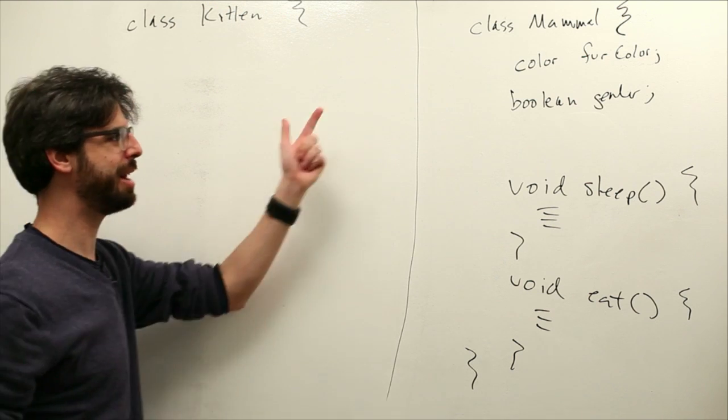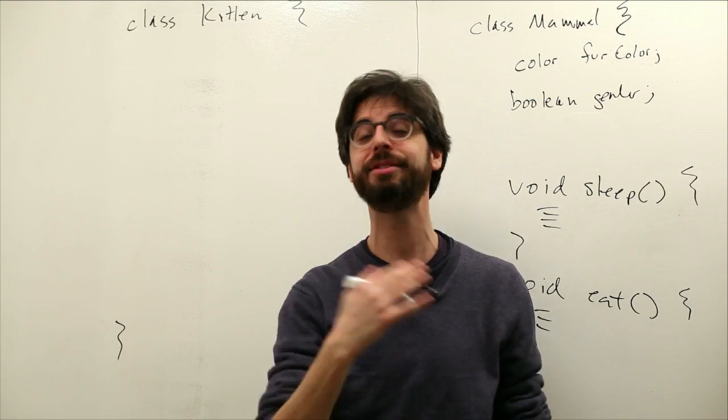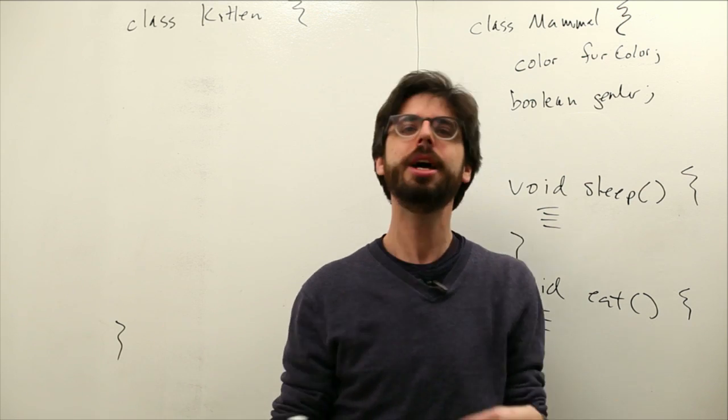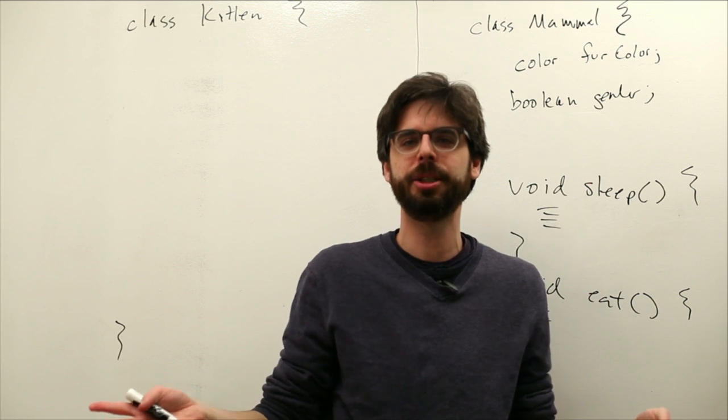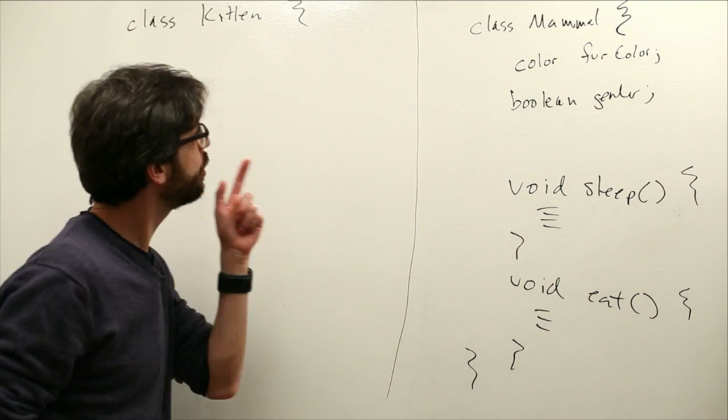And a kitten is also going to have a fur color, and a kitten is also going to have a gender. And a kitten's going to eat, and a kitten's going to sleep, and maybe a kitten's going to purr and meow, and have other things that it does too. So, how do we deal with this?